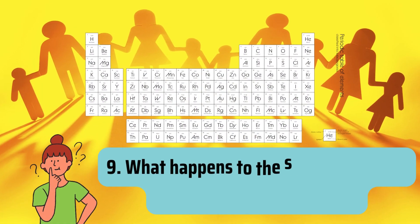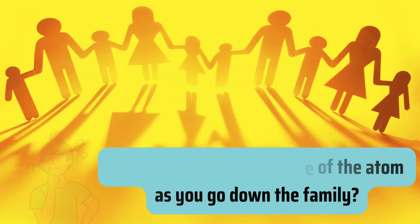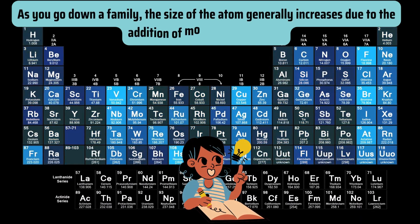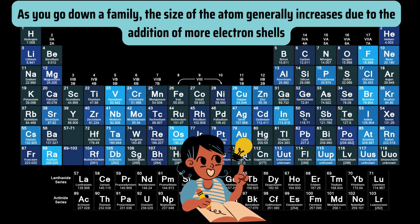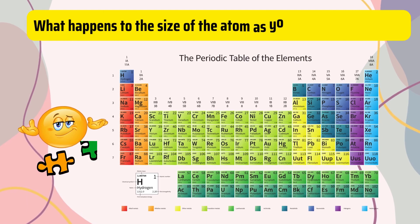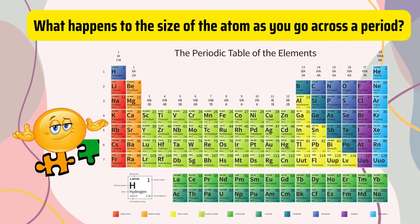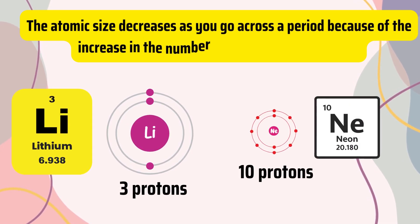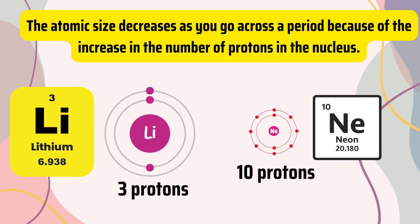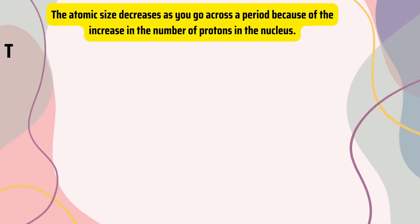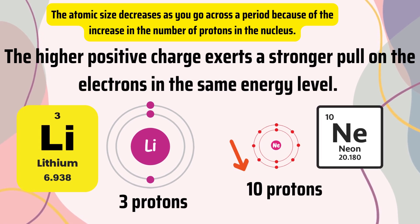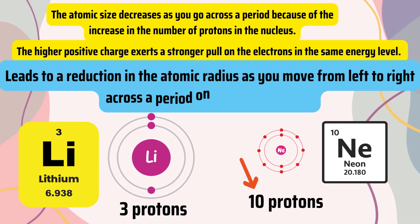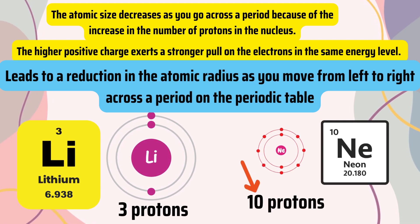Question 9. What happens to the size of the atom as you go down the family? As you go down a family, the size of the atom generally increases due to the addition of more electron shells. Question 10. What happens to the size of the atom as you go across a period? The atomic size decreases as you go across a period because of the increase in the number of protons in the nucleus. The higher positive charge exerts a stronger pull on the electrons in the same energy level, leading to a reduction in the atomic radius as you move from left to right across a period on the periodic table.